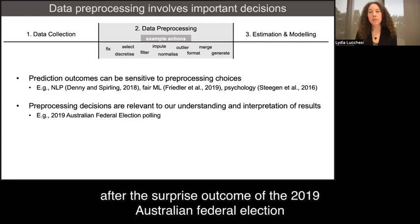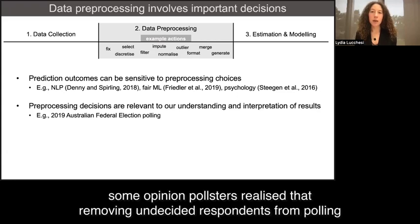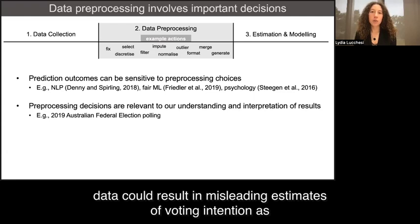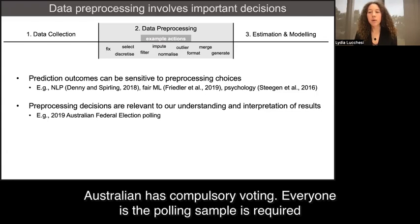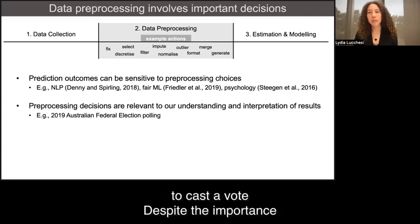For example, after the surprise outcome of the 2019 Australian federal election, some opinion pollsters realized that removing undecided respondents from polling data could result in misleading estimates of voting intention, as Australia has compulsory voting. Everyone in the polling sample is required to cast a vote.